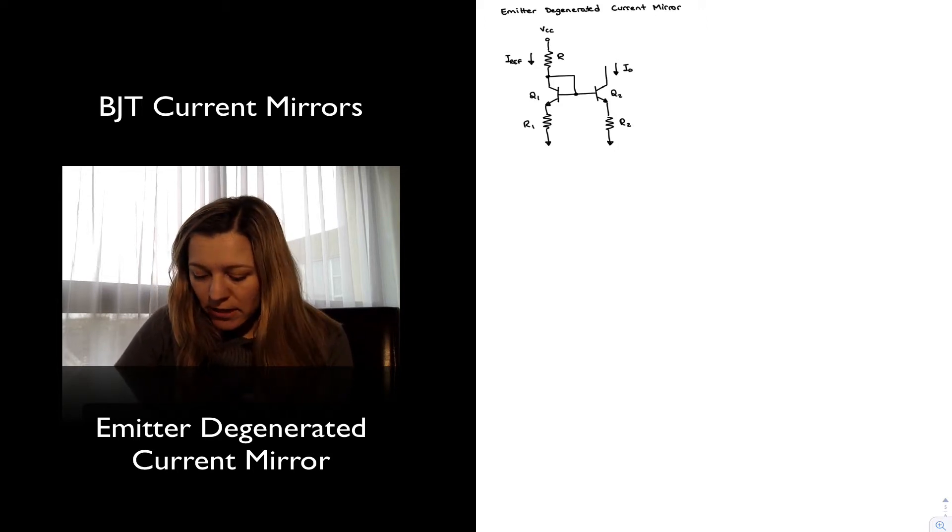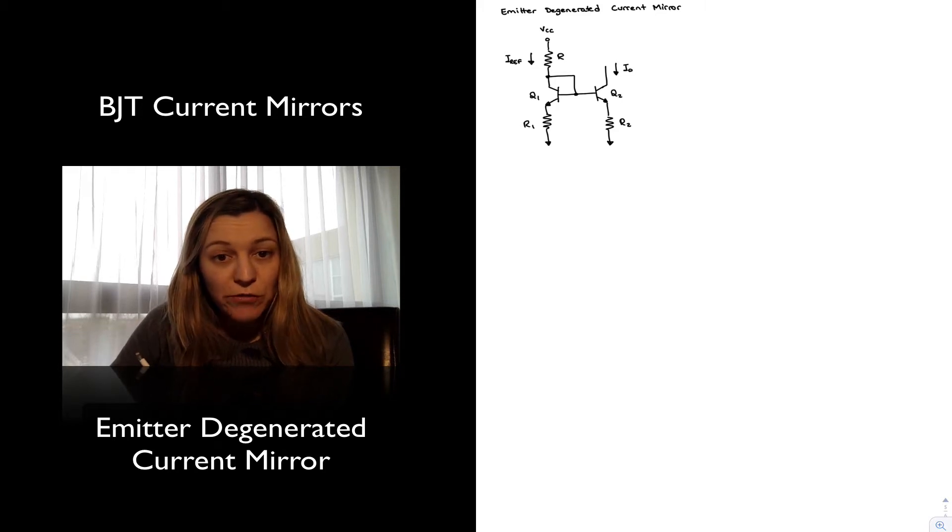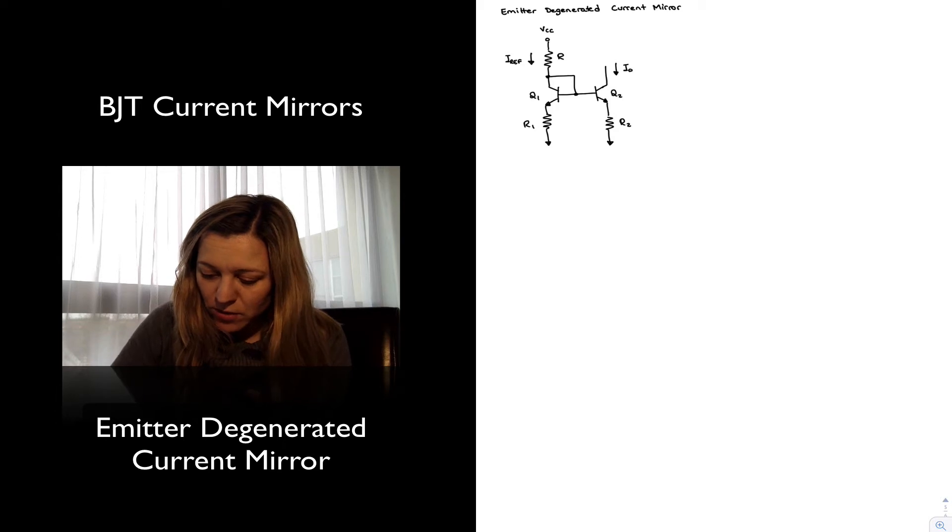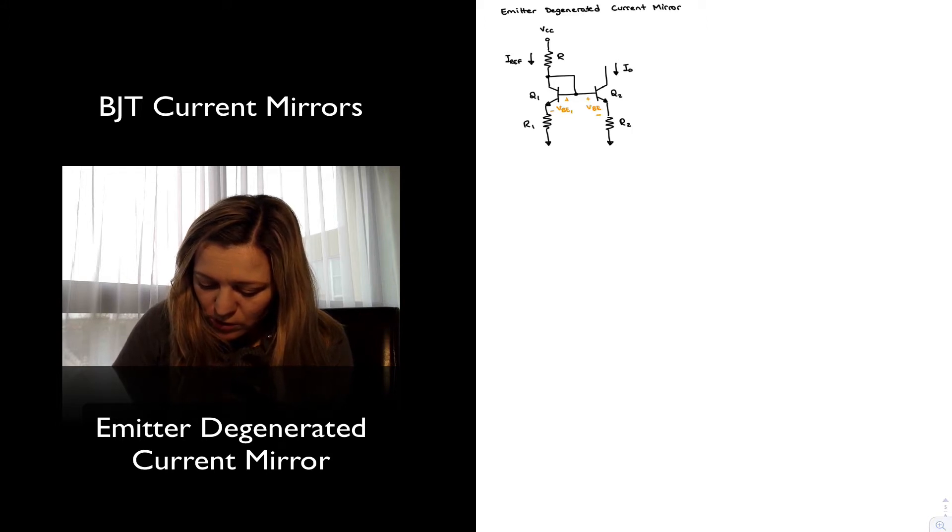Let's go ahead and take a look at what the current ratios will be for this transistor. I can see that I'm going to have my VBE voltage drops, VBE1, VBE2, across my transistors.